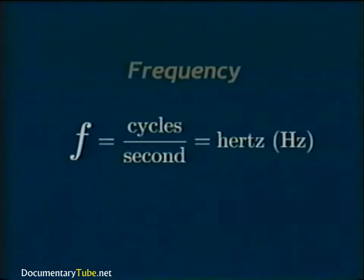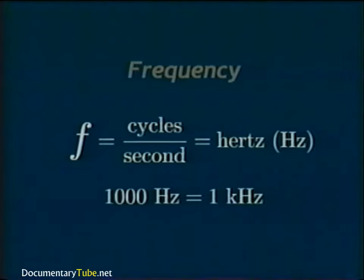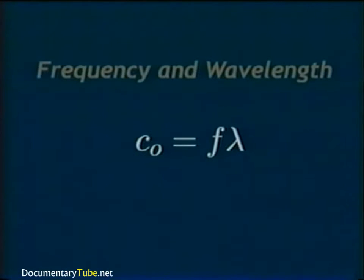For sound waves, a higher amplitude equates to a higher volume. Frequency, abbreviated with a lowercase f, is defined as the number of cycles of repetition per second — the number of wavelengths that have passed by a stationary point in one second. The unit of frequency is the hertz, abbreviated Hz, defined as cycles per second. When the number of hertz exceeds 1000, it is common to write the amount in kilohertz.